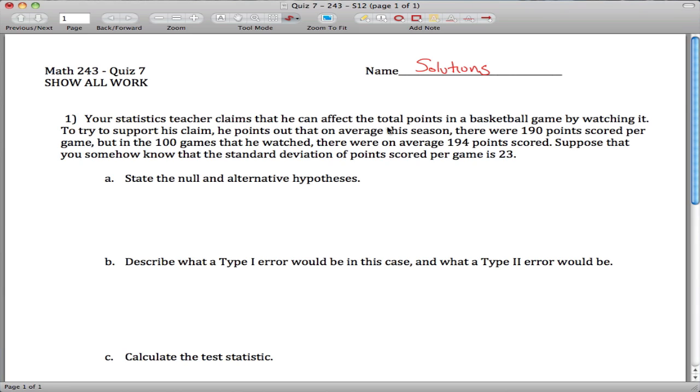The total points in a basketball game by watching it. To support his claim, he points out that on average this season there were 190 points scored per game, but in the 100 games that he watched, there were 194 points scored per game. Suppose that I somehow know that the standard deviation of points scored per game is 23.